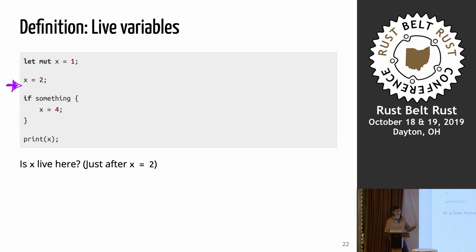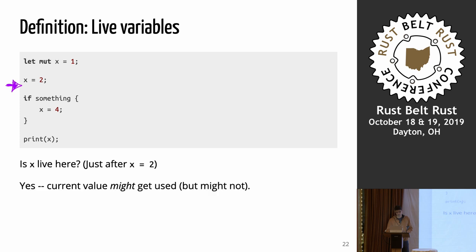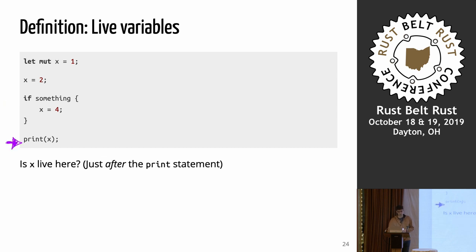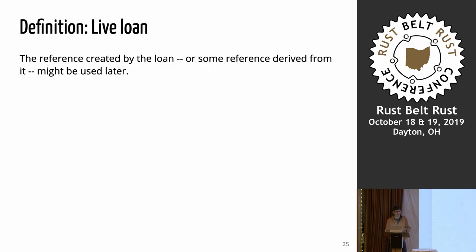If we go to the next line, x has the value two and this is live, because if we don't go through the if, we might read two at the print. So x is live here. If we jump inside the if just before we assign four, it's dead again — we're about to overwrite it. And it's also not live at the very end because there are no more uses of x.